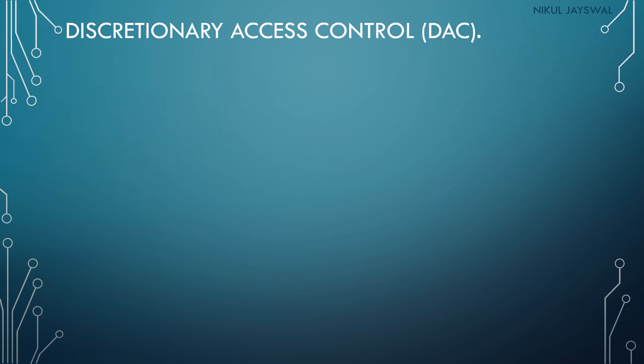Next is Discretionary Access Control (DAC). All the latest operating systems come with DAC. It allows each user to control access to their own data — if you are the owner of some data, you decide which users can access it. All major desktop operating systems, including Windows, use this type of access control mechanism as the default.